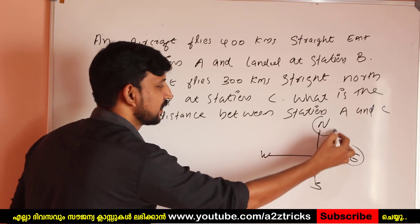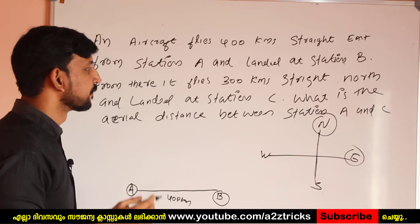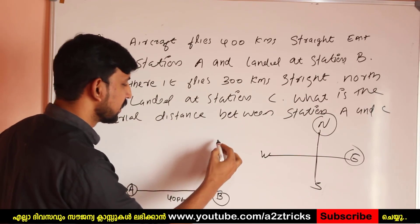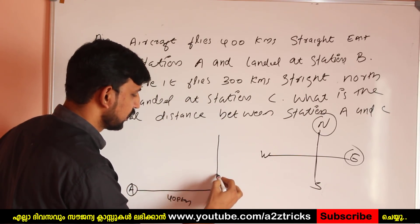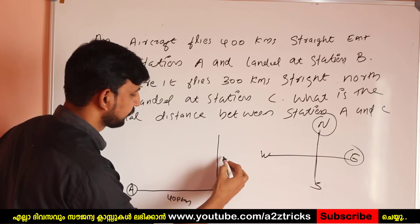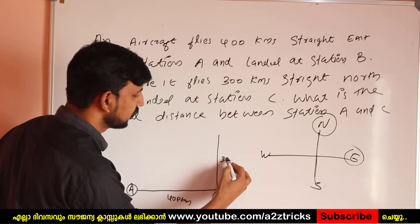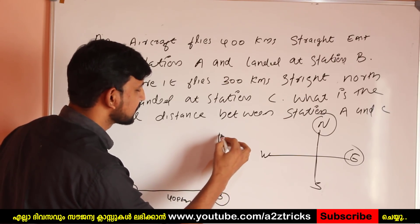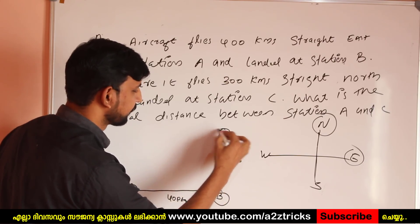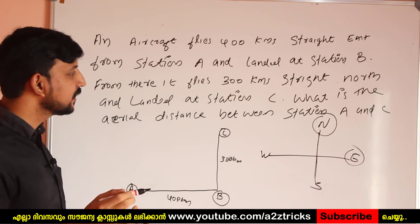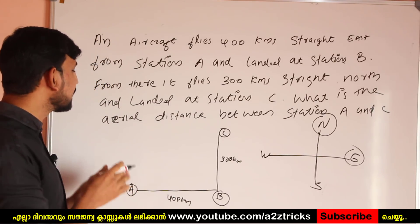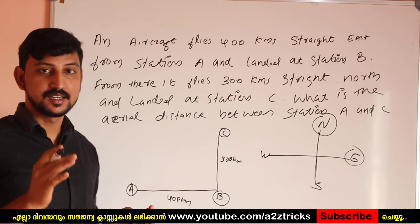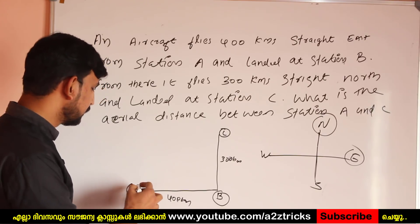Then the aircraft flies 300 km North to station C. We are now talking about the distance between station A and C.